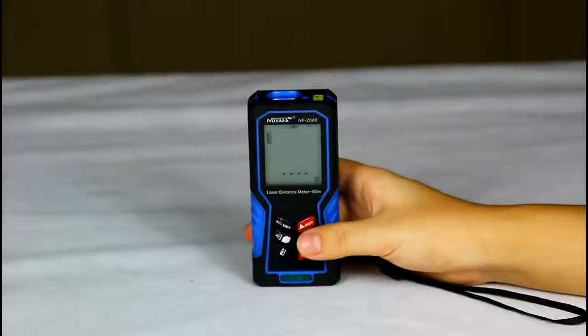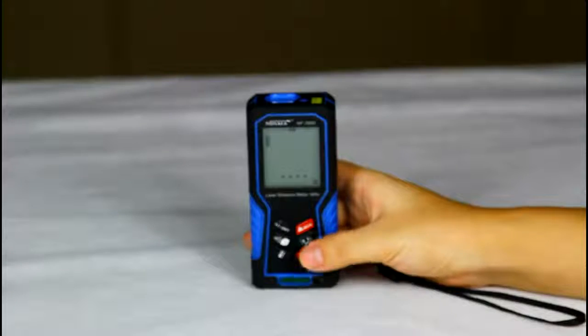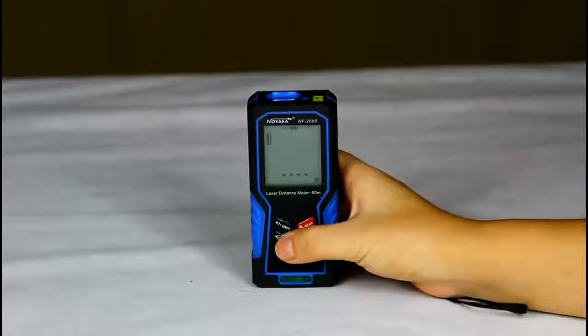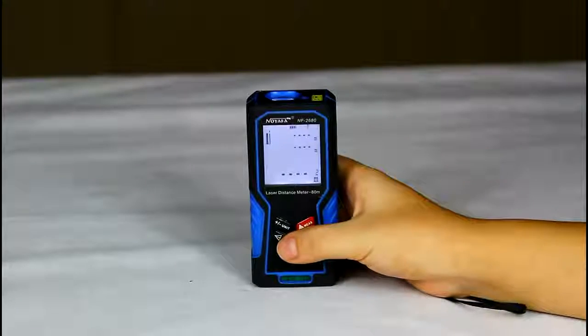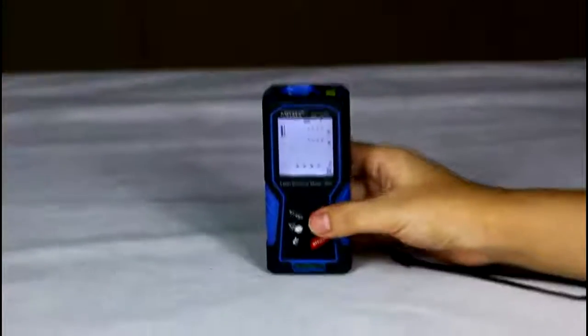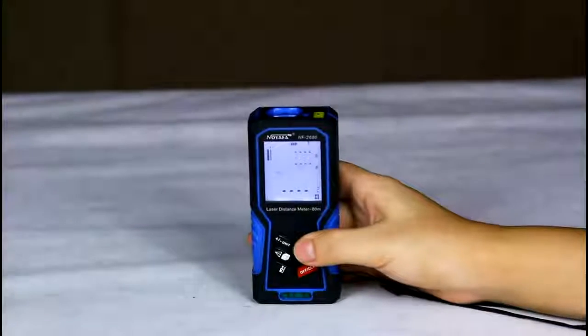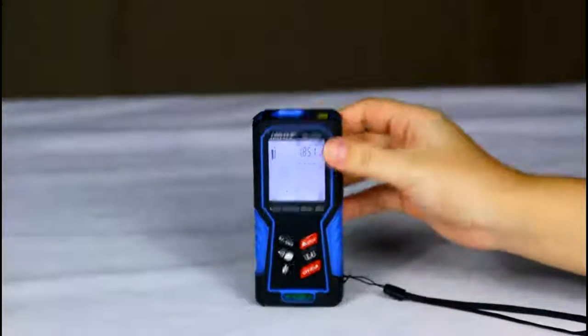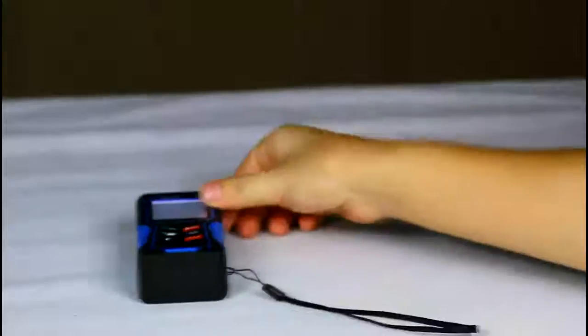Here, we are going to measure the area. Let's press this button to shift to area mode. Make sure the device is on a flat level. Now, we will press MEAS to measure the length firstly. Press this button again.